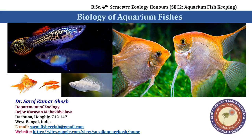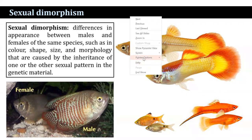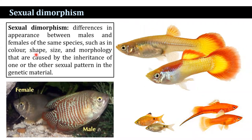What is sexual dimorphism? Sexual dimorphism refers to the differences in appearance between males and females of the same species — differences in color, shape, size, and morphology that are caused by the inheritance of one or the other sexual patterns in the genetic material.